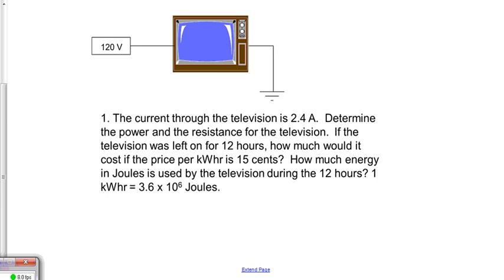Okay, in this lesson we're going to investigate power for electrical currents and we're going to look at electrical energy and the cost of electrical energy. So there's a television at 120 volts and the current of the television is 2.4 amps, and we want to first of all determine the power and the resistance for the television.